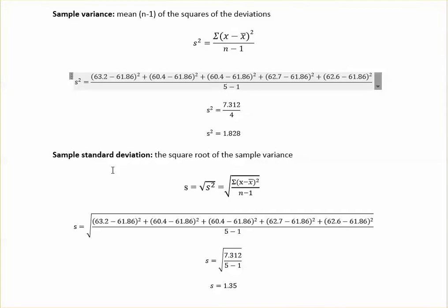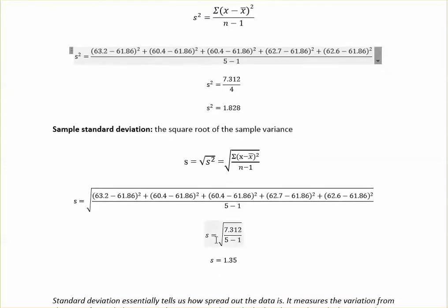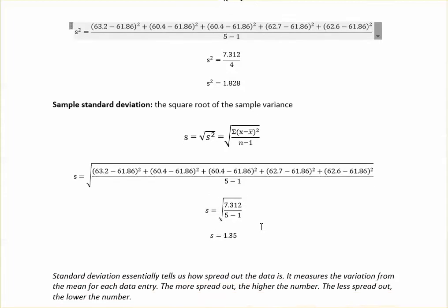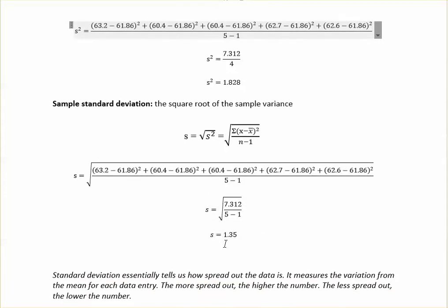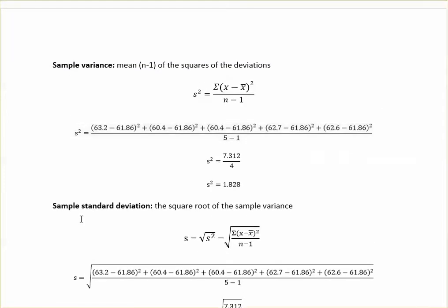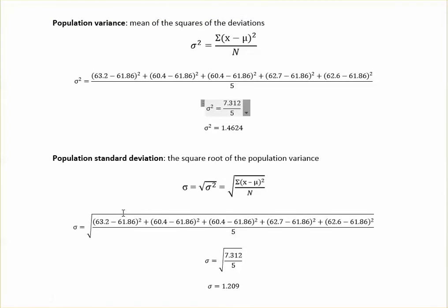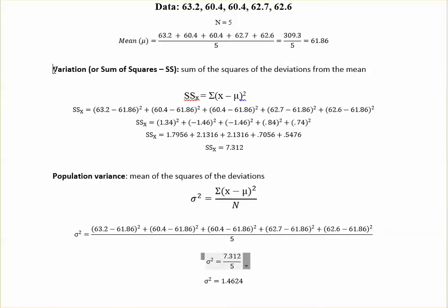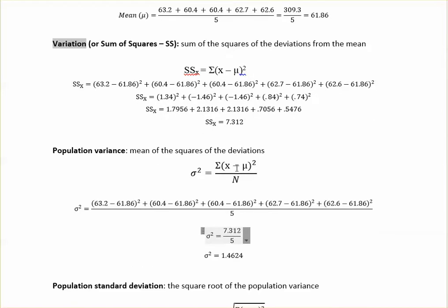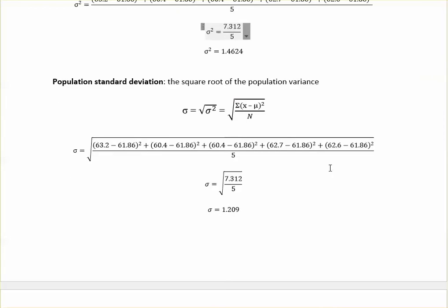Then to find the sample standard deviation, you take that 1.828 and take the square root of that. And once you do that, you get s is equal to 1.35. So we've kind of worked through the sample variance and the sample standard deviation. And in all honesty, the variance and standard deviation are both pretty easy to find as soon as you get the variation. So the variation is the one that takes the longest to do. But once you've got that done, the rest of it actually should be pretty straightforward and shouldn't be too hard to work through.